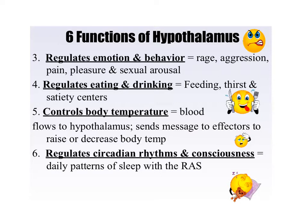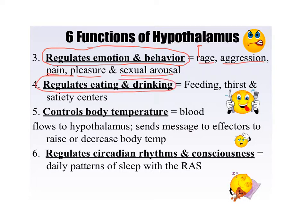It helps to regulate emotion and behavior — things like rage and aggression, pain, pleasure, and sexual arousal are all partially controlled by the hypothalamus. It regulates your eating and drinking patterns, so when you feel thirsty or hungry, you can thank your hypothalamus. Satiety centers are centers that say, 'I'm full, please stop eating now.' It helps control body temperature — super important for homeostasis — trying to keep your body at around 98.6 degrees Fahrenheit or 37 degrees Celsius.